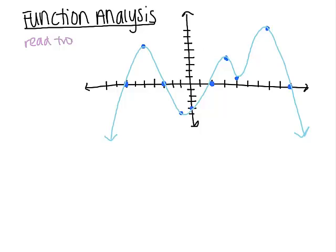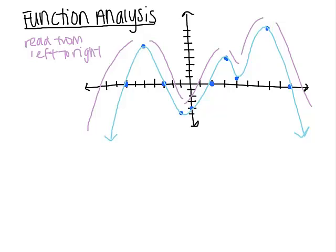When you look at the graph, you're going to describe everything moving from left to right. Starting over here, the function is going up, hits a point, comes back down, hits a point, goes up again, back down, up again, and back down on forever. When the function goes up and down, we call those increasing and decreasing intervals.